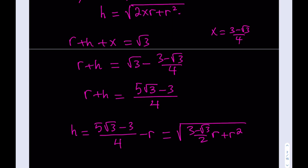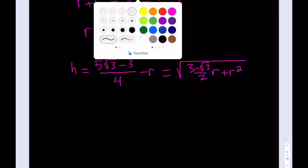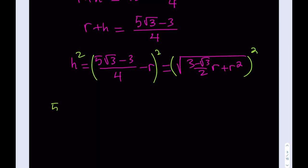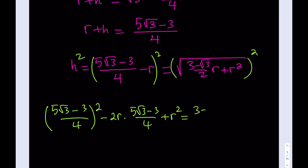So we're going to square both sides. The nice thing is we have R² on both sides. Squaring gives: [(5√3 − 3)/4 − R]² = (3 − √3)/2 · R + R². Expanding the left side: (5√3 − 3)²/16 − 2R·(5√3 − 3)/4 + R² = (3 − √3)/2 · R + R². Expanding (5√3 − 3)²: 75 − 30√3 + 9 = 84 − 30√3.